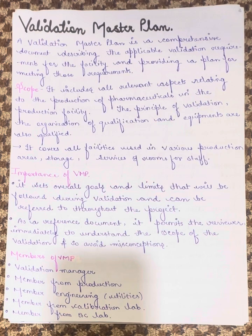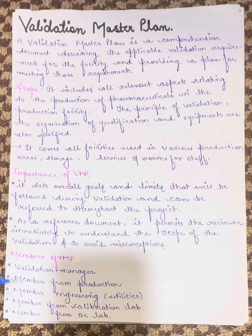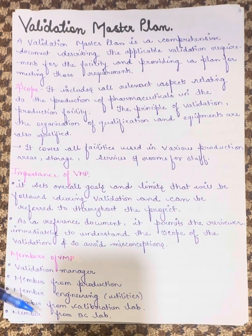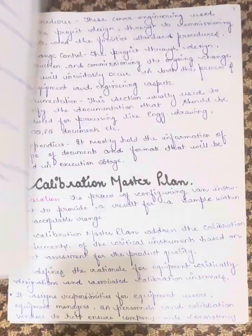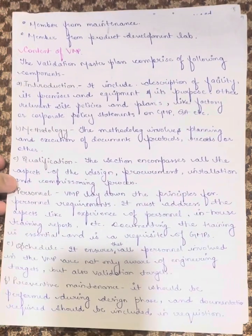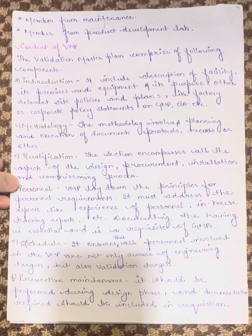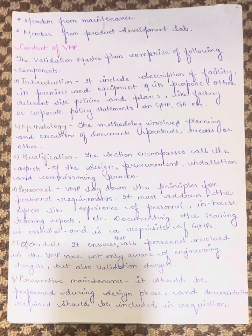The members of the Validation Master Plan include the validation manager, a member from production, a member from engineering, a member from the calibration lab, a member from the quality control lab, a member from maintenance, and a member from the product development lab.